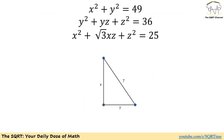To solve this problem we are going to take each expression at a time. For x² + y² = 49, we write 49 as 7², and we can see this as a right triangle with sides x, y, and 7.